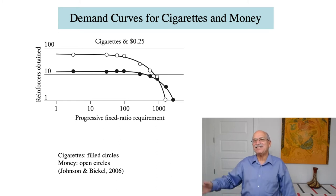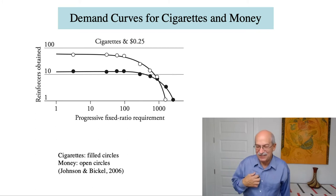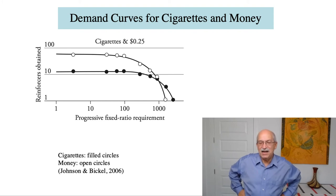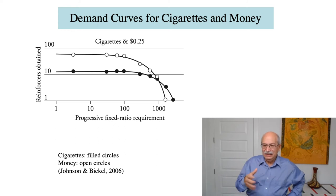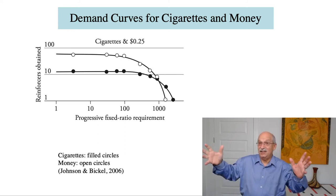So you're increasing the price of these puffs on a cigarette. And you can see, for a while, the demand is not sensitive to price, but then it drops off. And the filled circles represent the drop-off for cigarettes. Another phase of the experiment, the reinforcer was 25 cents. And there is also a drop-off in the demand curve for money. You can see that the elasticity of demand for money, open circles, is a little bit greater than the elasticity of demand for cigarettes. So this is an illustration of demand curves in an instrumental conditioning situation.